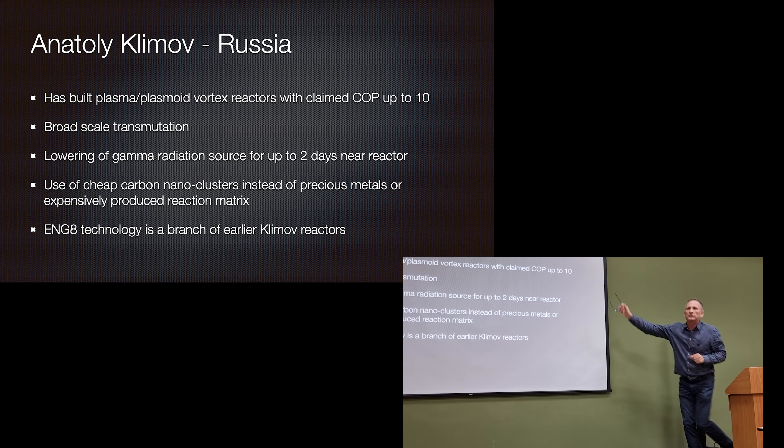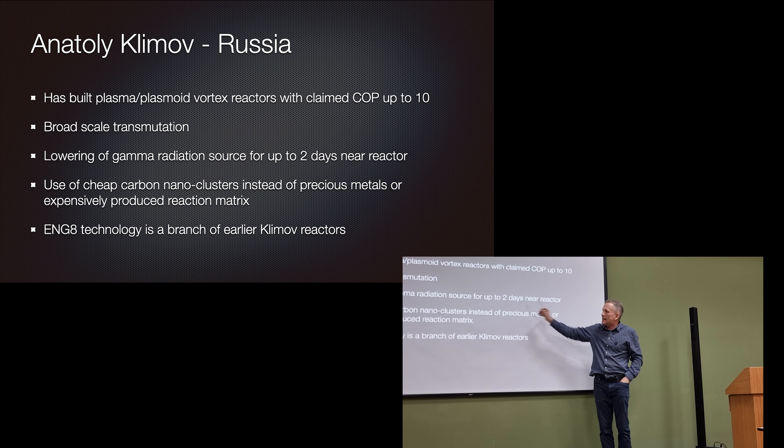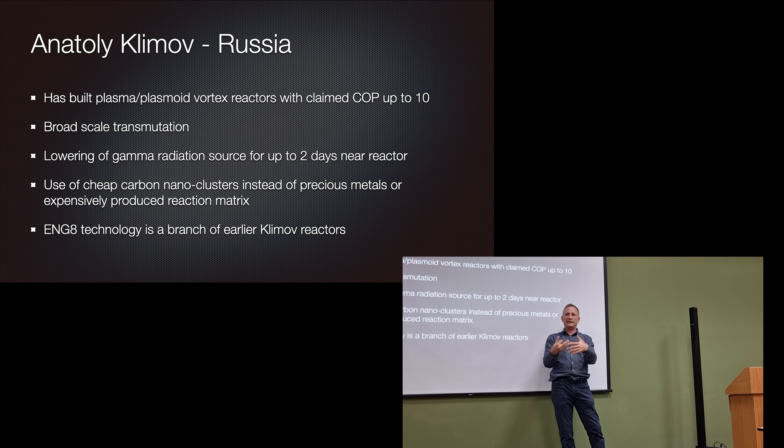So broad-scale transmutation. Why transmutation? In his latest data he found by having some elements, you can get elements that when they interact they produce a gamma ray. He found that, so this is producing radiation next to his reactor. When he runs his reactor for about two days the amount of gamma rays that are observed by the same detector are reduced.